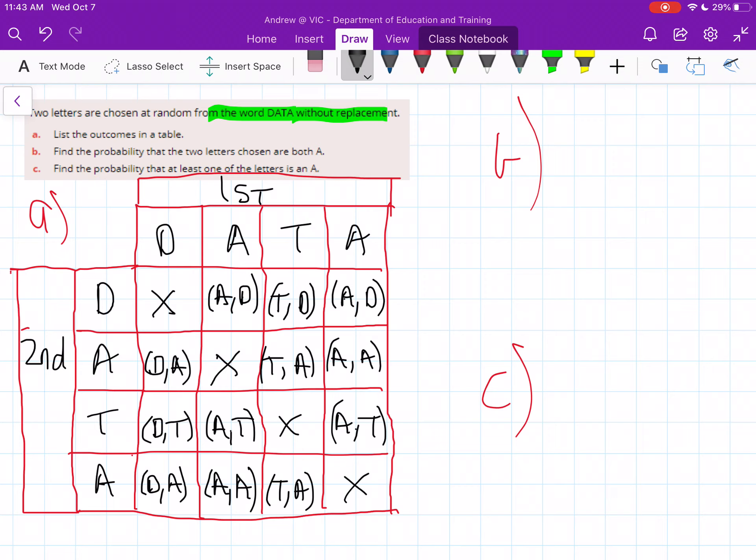Find the probability that two letters chosen are both A. So we need to figure out our probability. Just remember, probability is equal to your amount over total. So the total is actually how many choices we do have here. So if you count them all up, we'll just do that now. We've got 3, 4, 5, 6, 7, 8, 9, 10, 11, 12. So we've got 12 as our total.